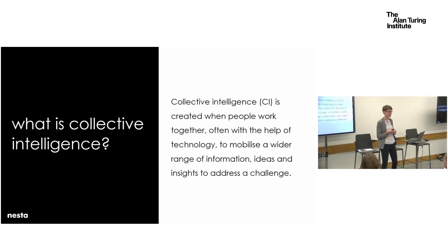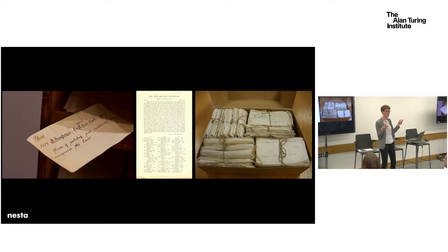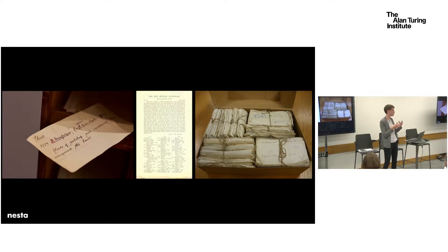The idea of collective intelligence is not new. It's based on the theory that diverse groups of people are collectively smarter than each individual by themselves. Here's an example from the 19th century: the Oxford English Dictionary, produced in collaboration with many volunteers all over the UK who submitted millions of words and their meanings to the editors. It didn't happen with four or five people sitting in a room — it was a distributed way of gathering all the information, and that's a really early example of collective intelligence.